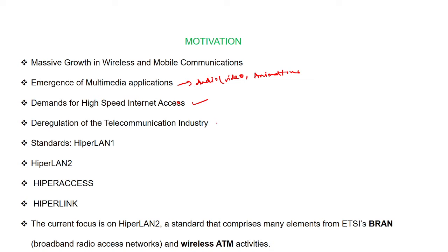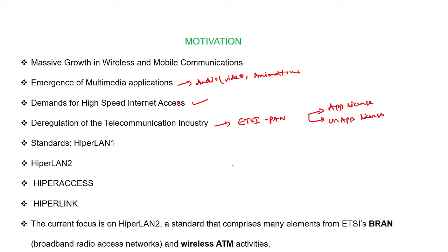Another important concept is the deregulation of the telecommunications industry. With respect to the ETSI PAN standard, HiperLAN works under either an approved license or an unapproved license. An approved license means getting access through a public server, supporting different frequency bands. An unapproved license means access through free bands, where we cannot guarantee 100% safe communication, so we prefer the approved license.